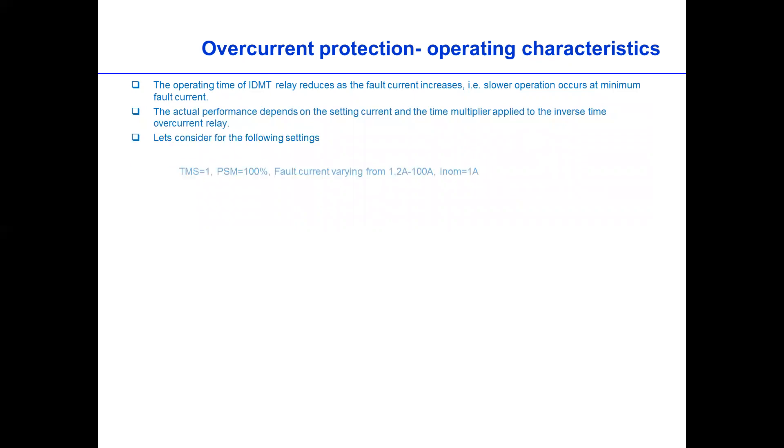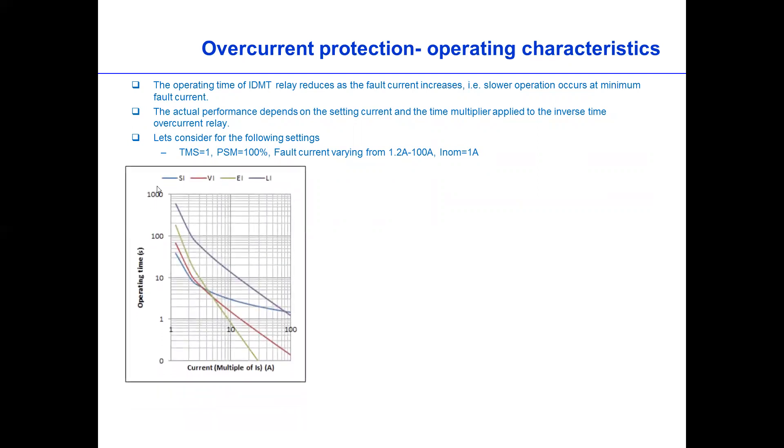So let's go for the following setting. We have TMS value of 1, PSM 100%, and fault current varying from 1.2 to 100 and nominal current of the relay is 1. So this is based on this setting, different curves: standard curve, which is the blue, very inverse is the red curve and extremely inverse is the green and purple curve is the long inverse. So basically this means that at high fault level then the trip time is faster and at low fault level then the trip time is delayed.